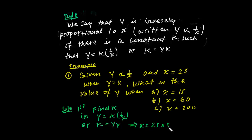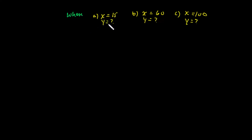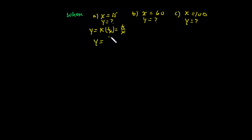When x is 25 and y is 8, k equals 25 times 8, which equals 200. So the value of k is 200. Now using y equals k over x, which is 200 over x: when x equals 15, y equals 200 over 15, which is approximately 13.33.